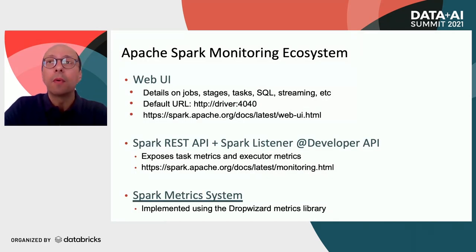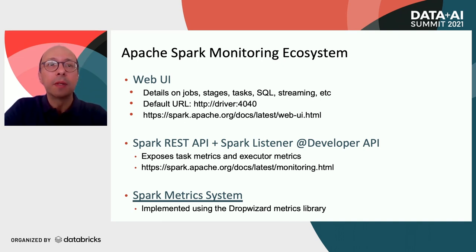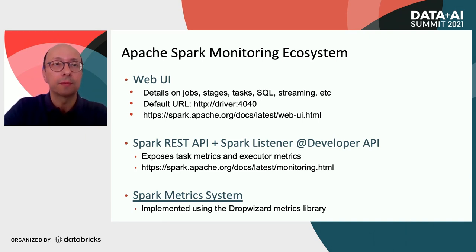Apache Spark monitoring ecosystem — let's have a quick recap. The web UI is the first entry point to Spark instrumentation with details on jobs, stages, tasks, SQL, streaming, etc. The REST API and the programmatic Spark listener API provide task metrics and executor metrics, which are also very useful for troubleshooting. And then there is the Spark metric system, which is the instrumentation we are going to use in the rest of this talk.